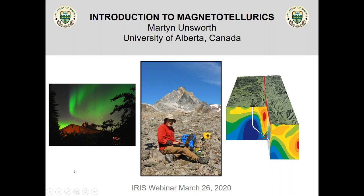I'm going to talk about MT, and my goal in this presentation is to give an overview for those of you who are not working in the subject. We'll start by seeing how MT can image the subsurface of the Earth. The energy source is things like the aurora — powerful signals that occur in the Earth's magnetic field. By measuring them on the ground at a number of points, we can get an image of the subsurface. This is an image of the San Andreas Fault from work we did in the early 1990s, when other geoscientists were beginning to take MT more seriously.